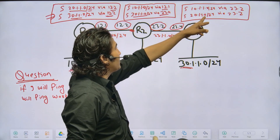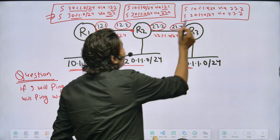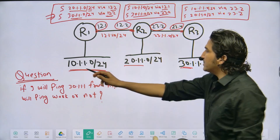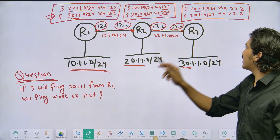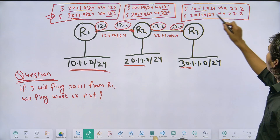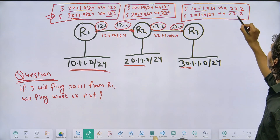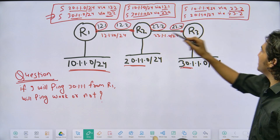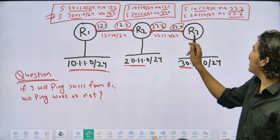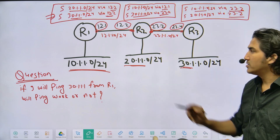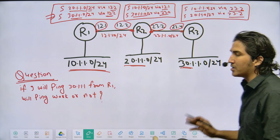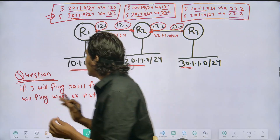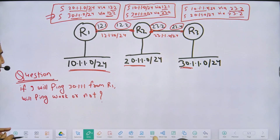In the routing table of Router 3, both 10.x and 20.x subnets are present, and both are reachable via 23.2 — meaning via Router 2's interface. So the gateway for Router 3 is Router 2's interface IP address. The static route configuration is correct on all three routers.